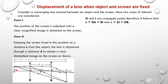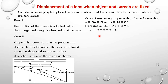From the diagram, U plus V equals L, and also AO plus AB plus BI equals L. Since AO is U, AB is the displacement D, and BI is V, we have U plus D plus V equals L. Since U equals V by symmetry, adding gives 2U equals L minus D, therefore U equals (L minus D) divided by 2.